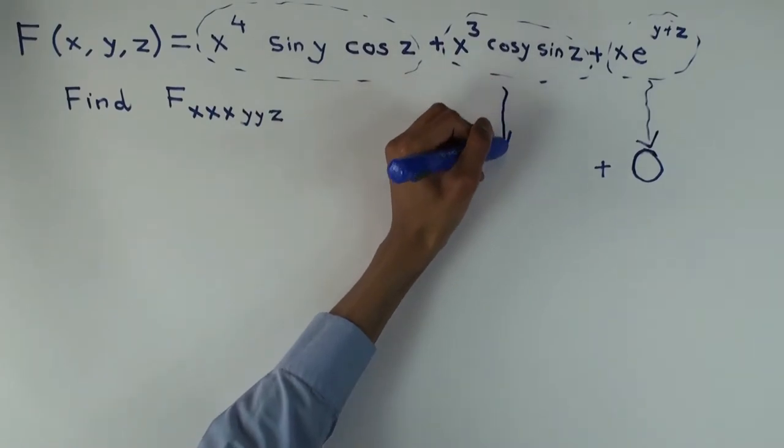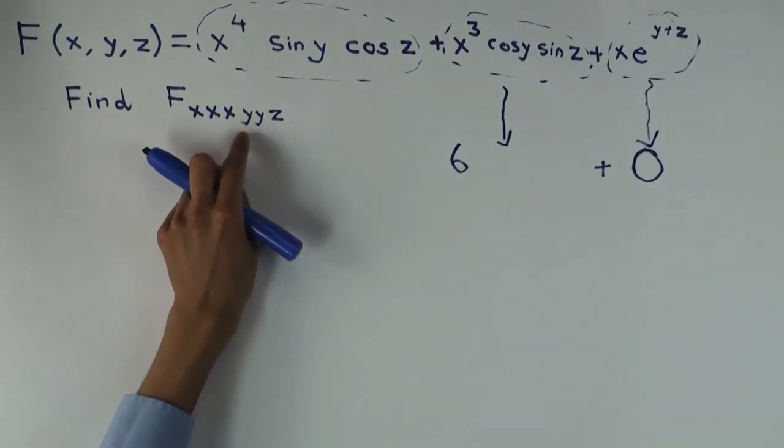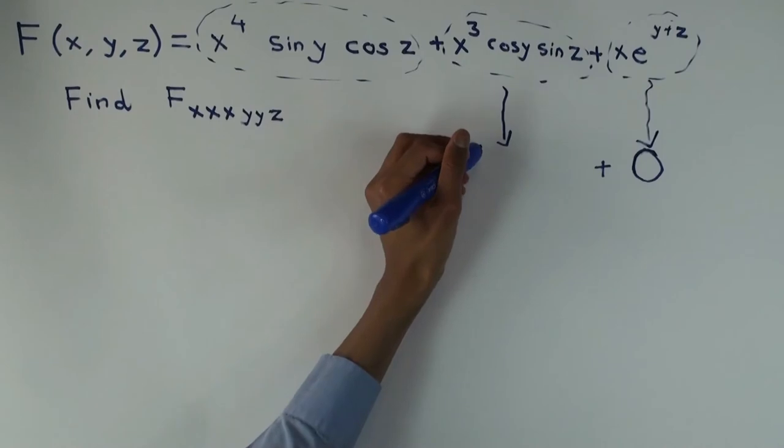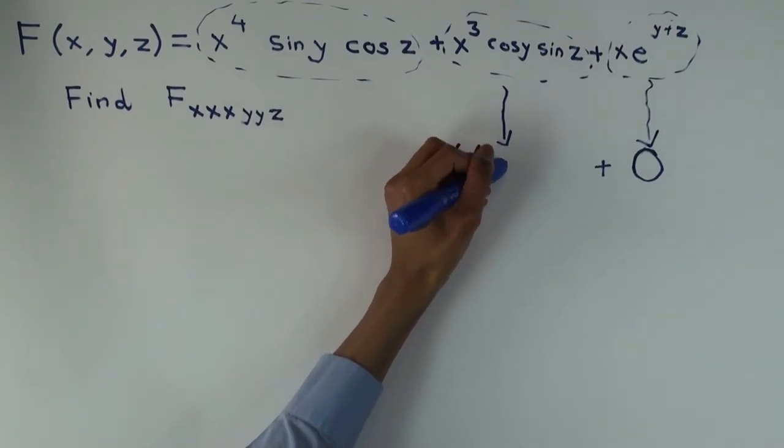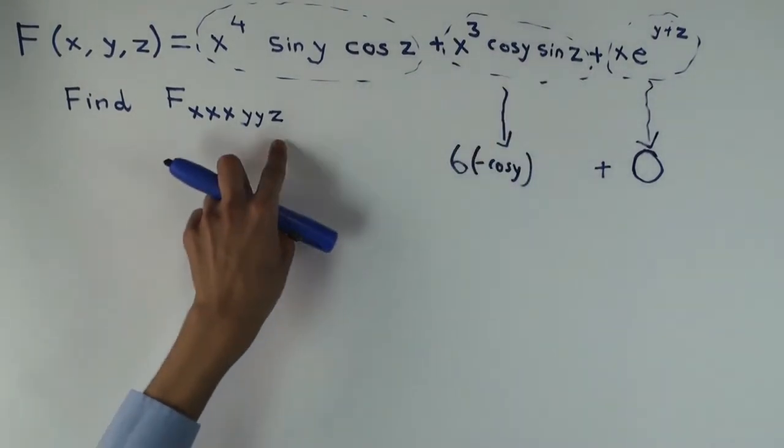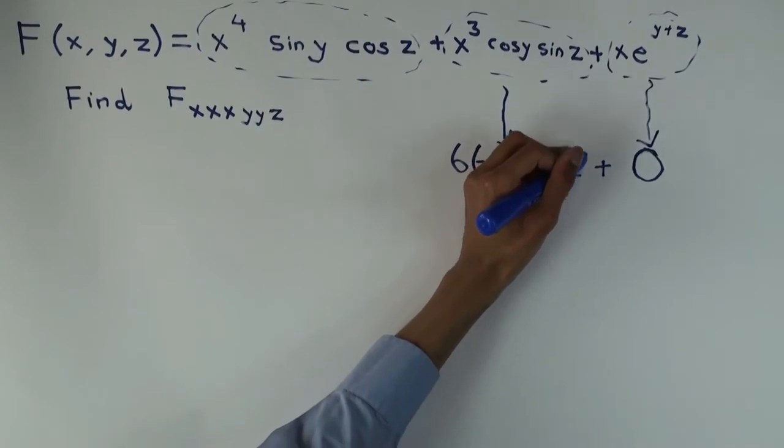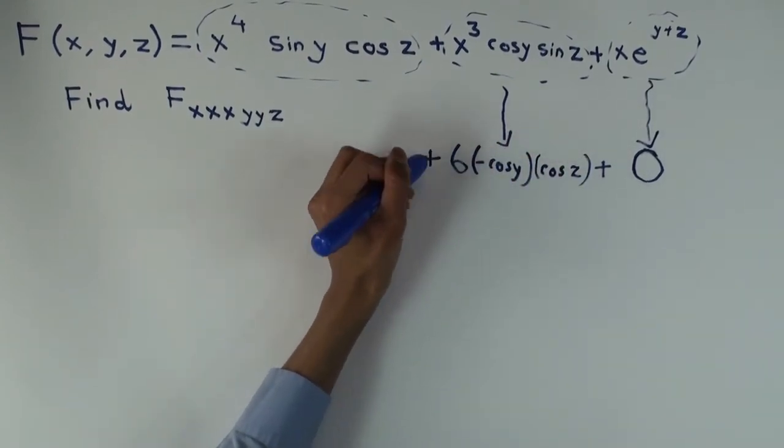Now cosine y, what happens when you differentiate cosine y two times? It goes back, but the sine becomes negative. You get negative cosine. What about sine z, how many times do you have to differentiate sine z? Once. Once, cosine z. So what's that? Cosine z. Good.